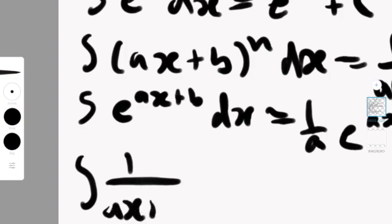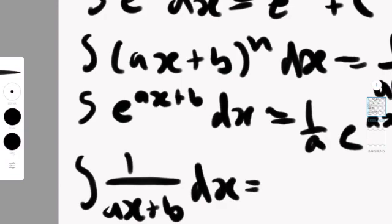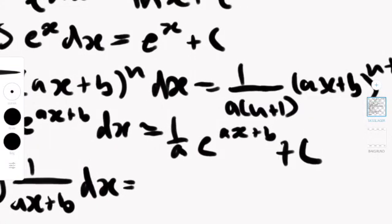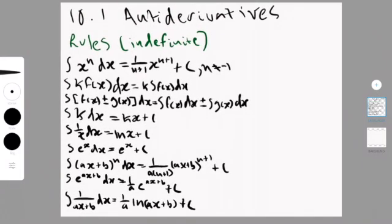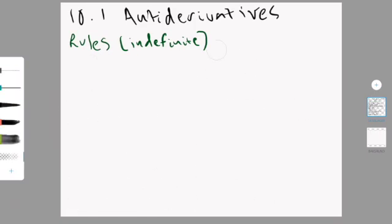So now if you have 1 divided by ax plus b, then you do 1 divided by a times ln, whatever's in the bracket, plus b. And yeah, those are basically all the rules. You're probably going to have to rewind this part of the video and look at them again. Yeah, it's really annoying. You just memorize them. That's pretty much it.